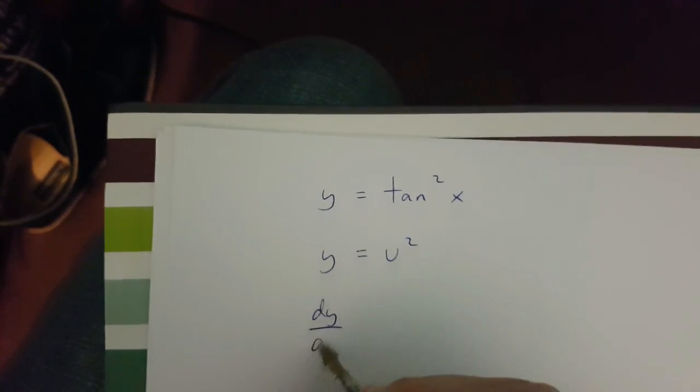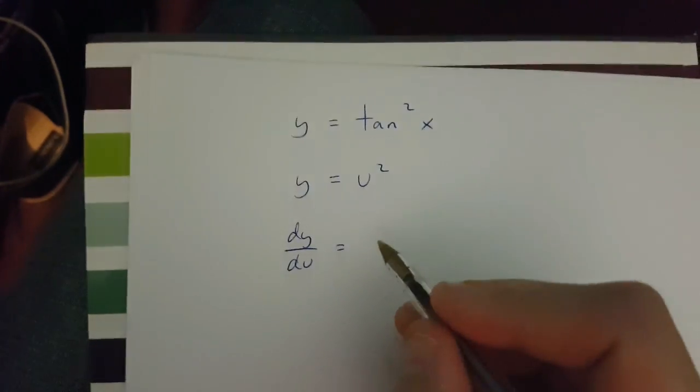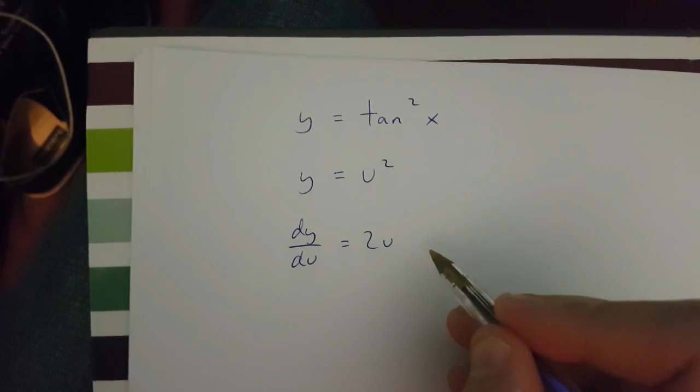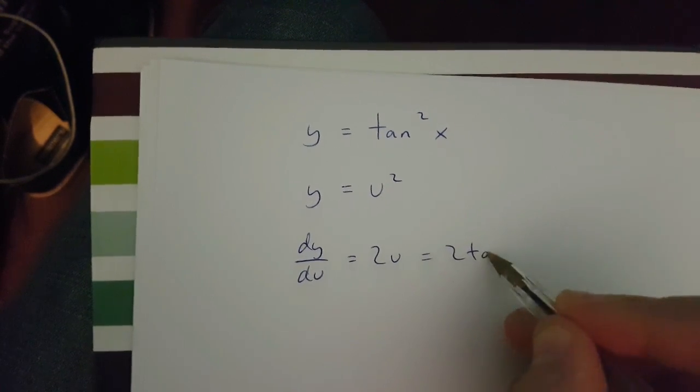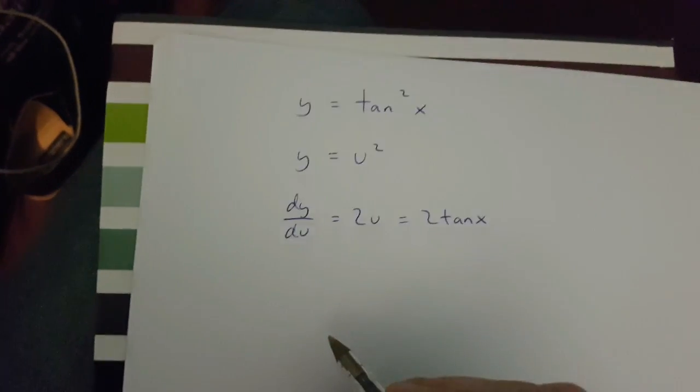then dy over du is going to be equal to 2u, which is 2 tan x.